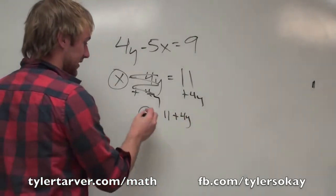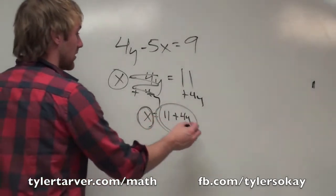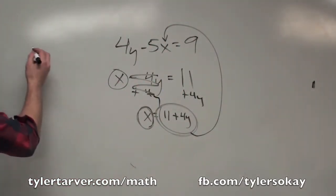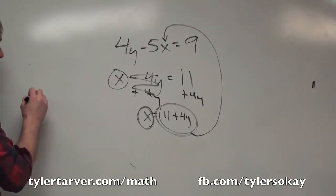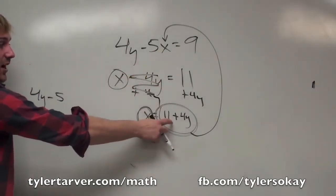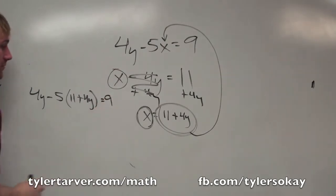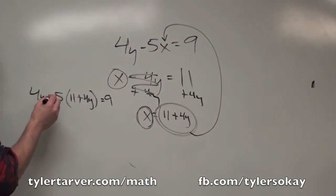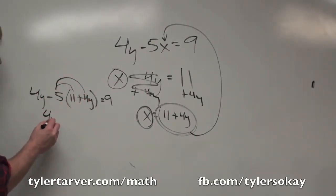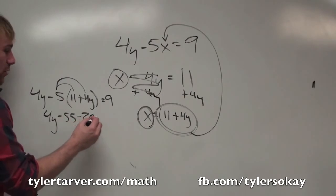Now I know what x equals, so in the first equation I plug in 11 plus 4y for x. Rewriting it: 4y minus 5 times (11 plus 4y) equals 9. I distribute the negative 5: that becomes negative 55 and negative 20y. So now we've got 4y minus 55 minus 20y equals 9.